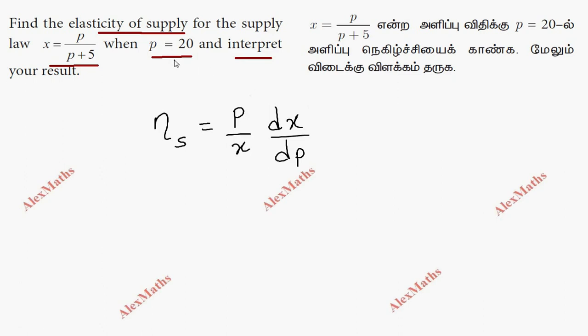This is the p value. The final answer is in terms of p. So this is the numerator p, and this is p by p plus 5.